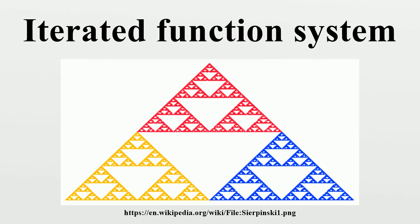The set S is thus the fixed set of the Hutchinson operator. The existence and uniqueness of S is a consequence of the contraction mapping principle, as is the fact that, for any non-empty compact set, random elements arbitrarily close to S may be obtained by the chaos game described below. Recently it was shown that IFSs of non-contractive type can yield attractors. These arise naturally in projective spaces, though classical irrational rotation on the circle can be adapted too.